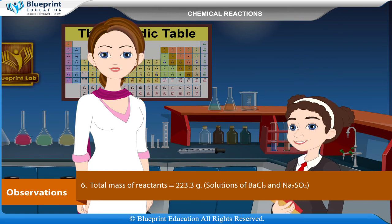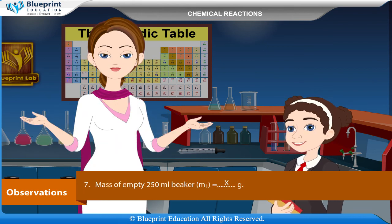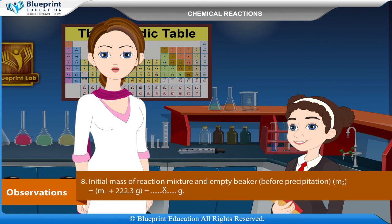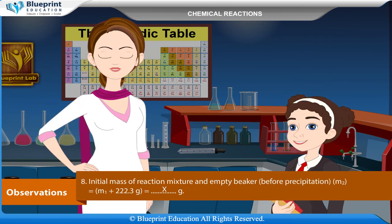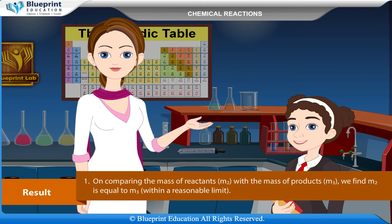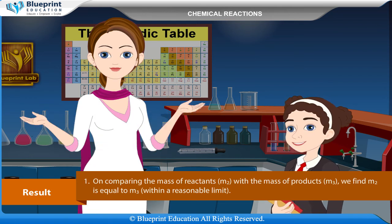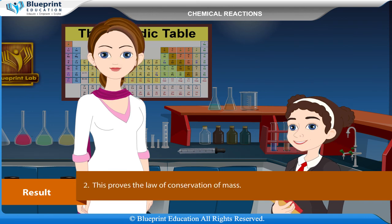Solutions of BaCl₂ and Na₂SO₄. Mass of empty 250 ml beaker M1 = X grams. Initial mass of reaction mixture and empty beaker before precipitation M2 = M1 + 223.3 grams = X grams. Final mass of reaction mixture in the beaker after precipitation M3 = X grams. Result: On comparing the mass of reactants M2 with the mass of products M3, we find M2 = M3 within a reasonable limit. This proves the law of conservation of mass.